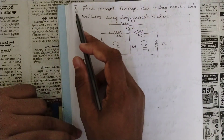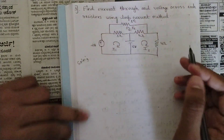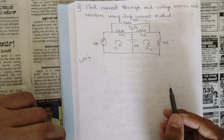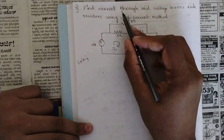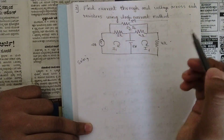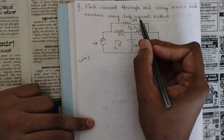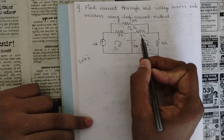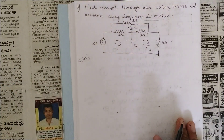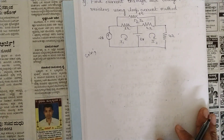We are continuing with the third problem: find the current through and voltage across each resistor using the loop current method, also known as mesh analysis. In this circuit we have four resistors — two 1-ohm and two 4-ohm — and the first step remains the same: apply KVL and solve for the three loop currents.